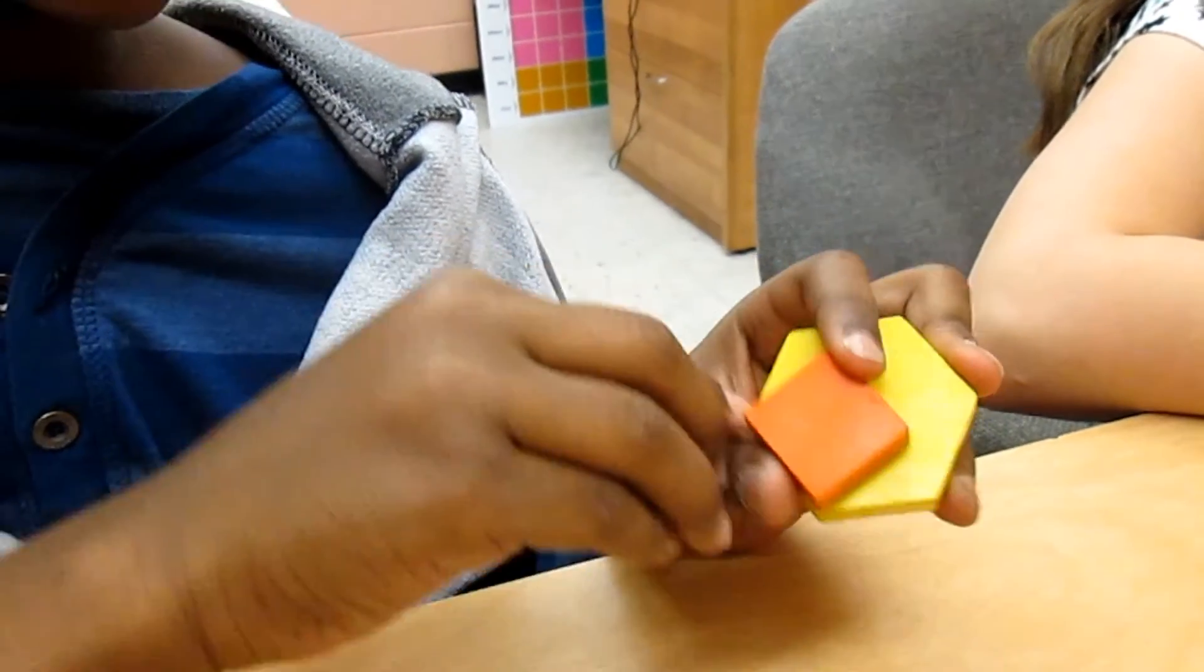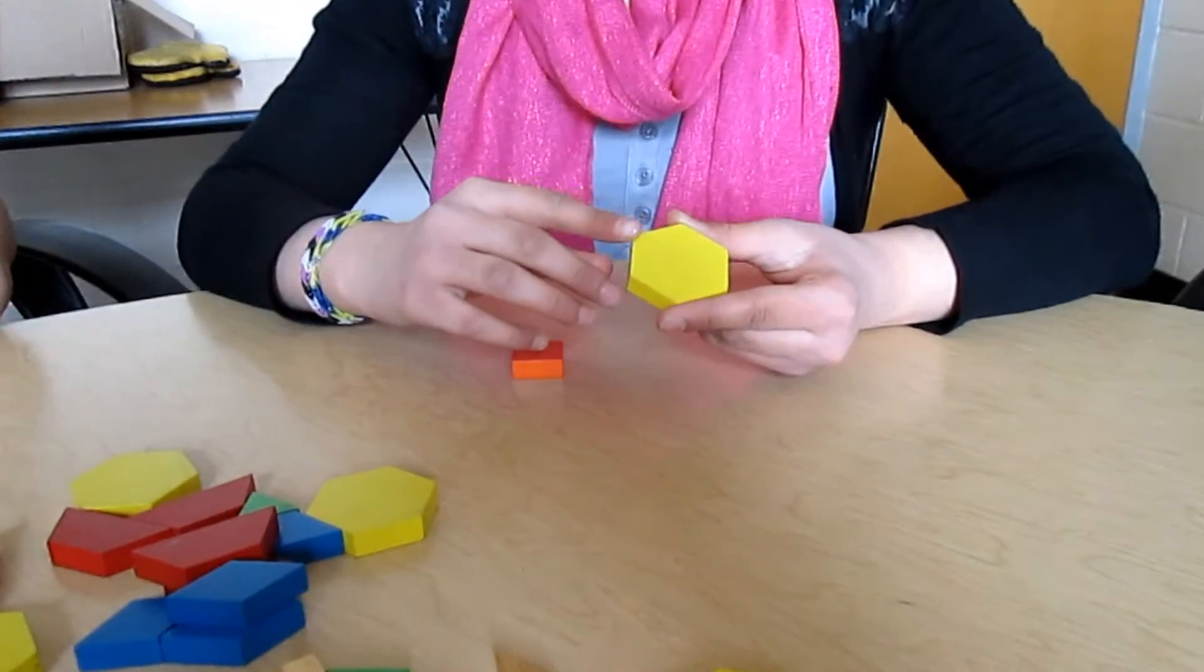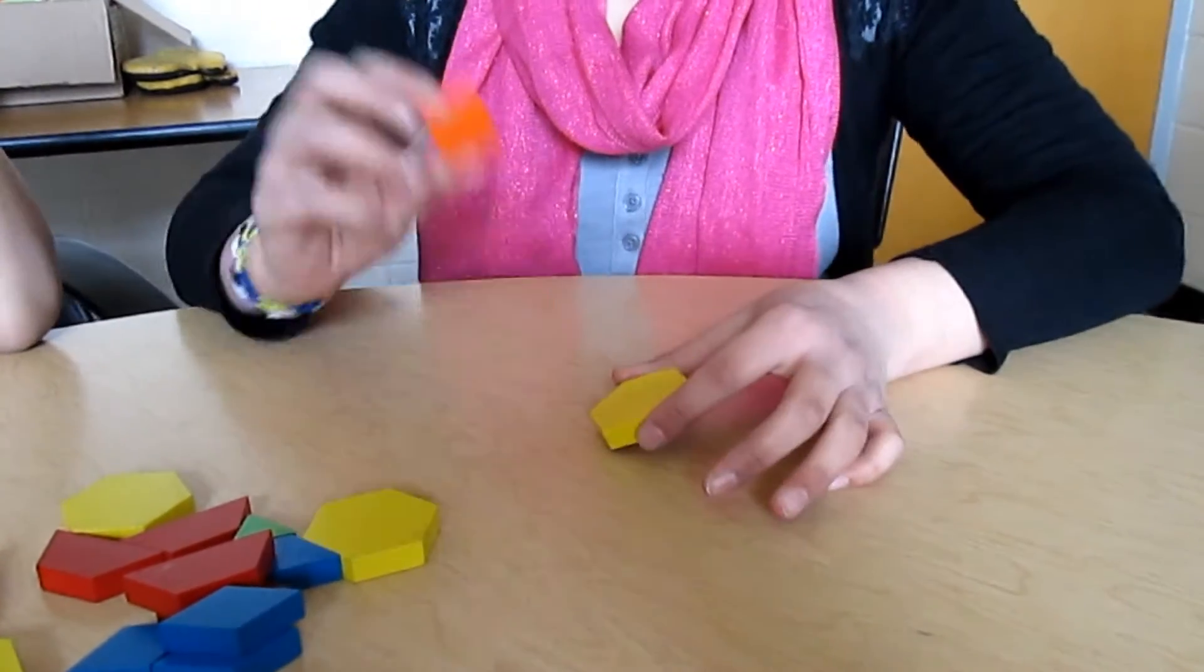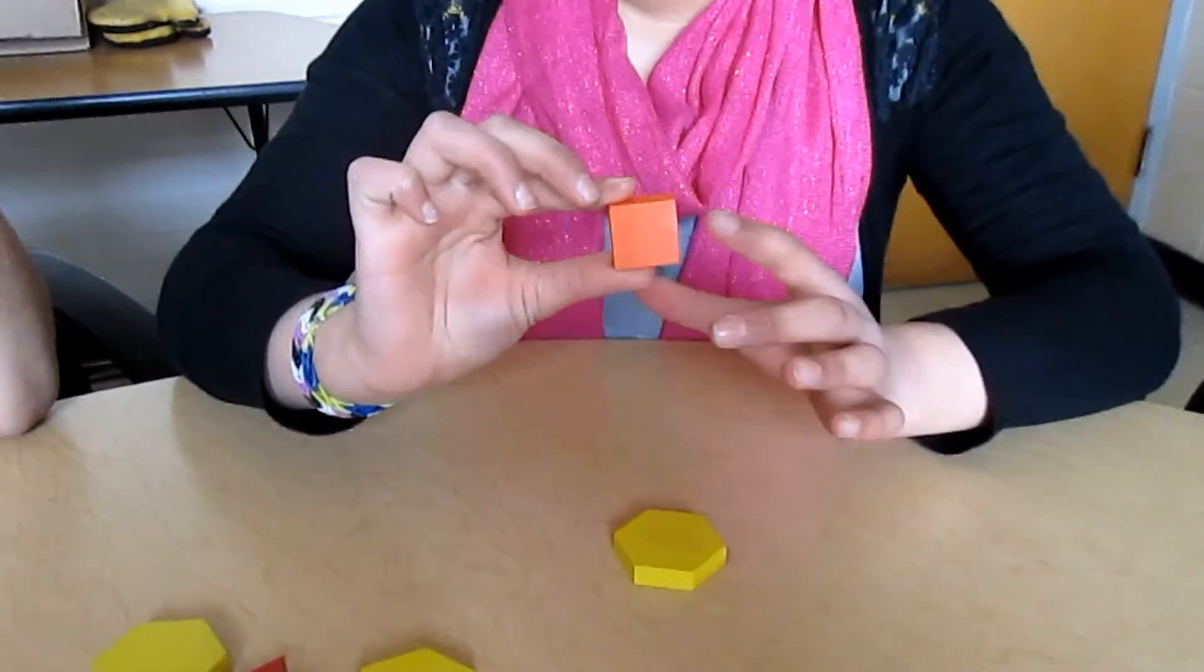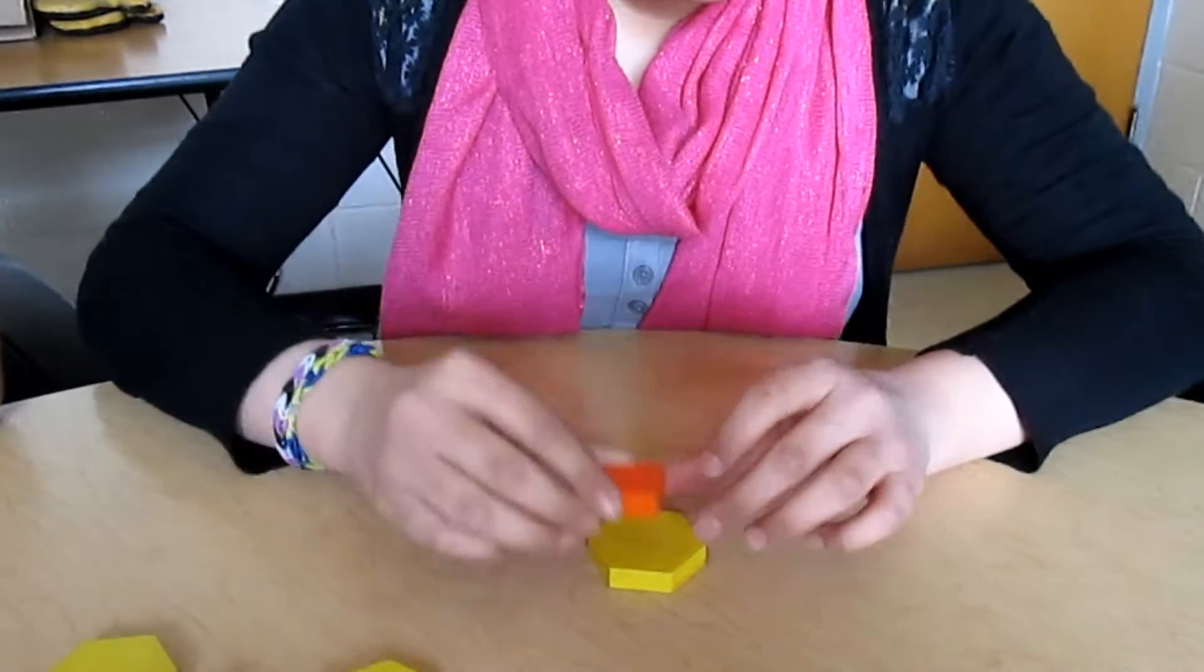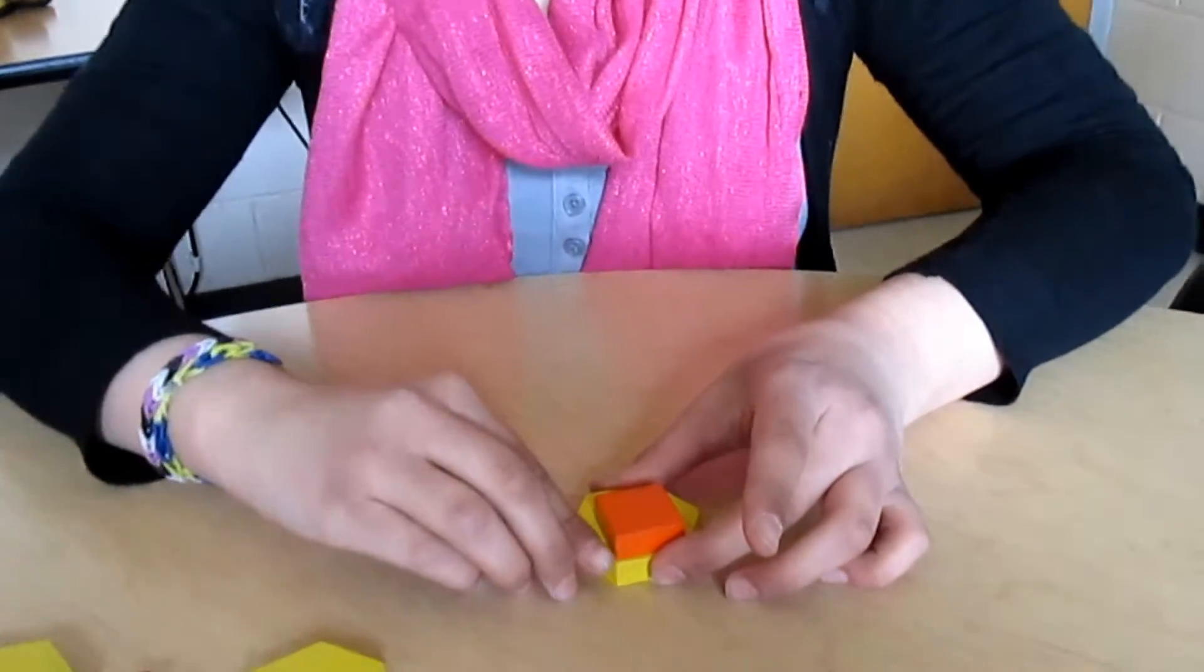This is a hexagon. Each corner is obtuse because I know that this is a right square, and every side is a right angle, so if I put it on top, it's like bigger.